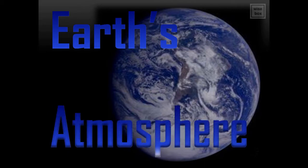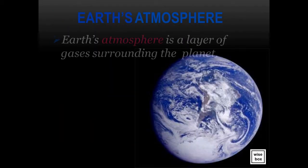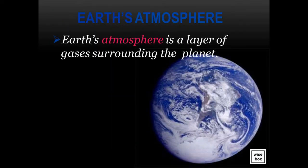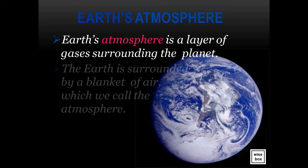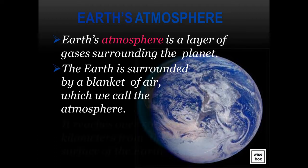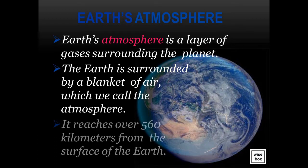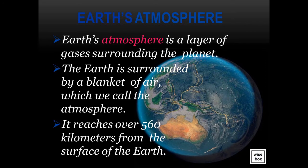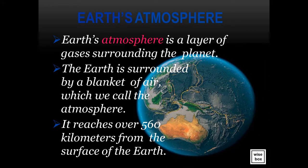Earth's Atmosphere. Earth's atmosphere is a layer of gases surrounding the planet. The Earth is surrounded by a blanket of air, which we call the atmosphere. It reaches over 560 kilometers from the surface of the Earth.